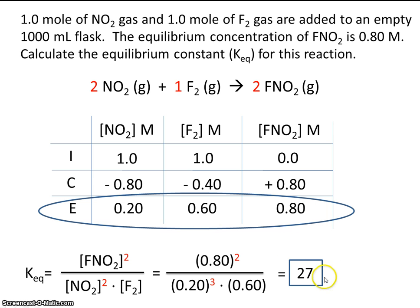So once again, this is bigger than 1. So that tells you that this reaction here is product favored.